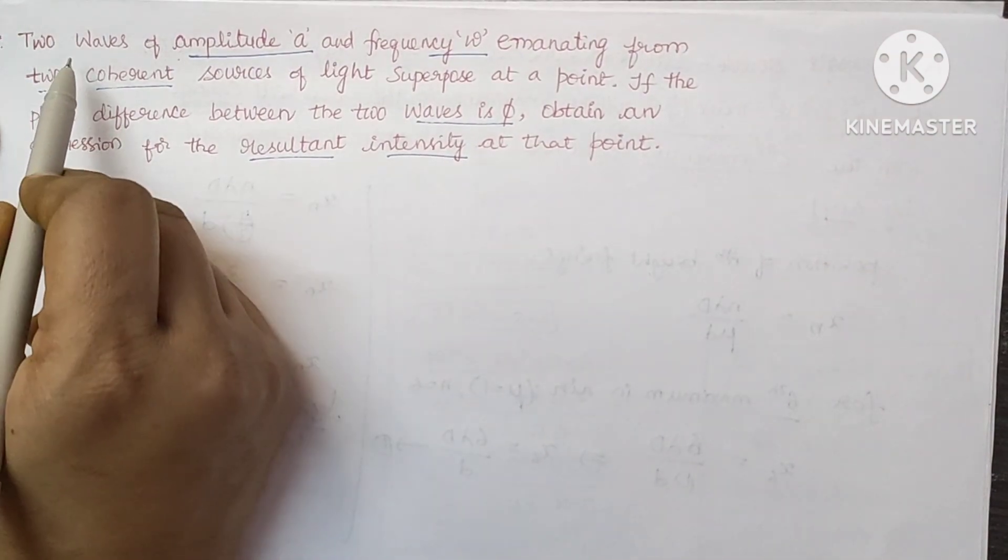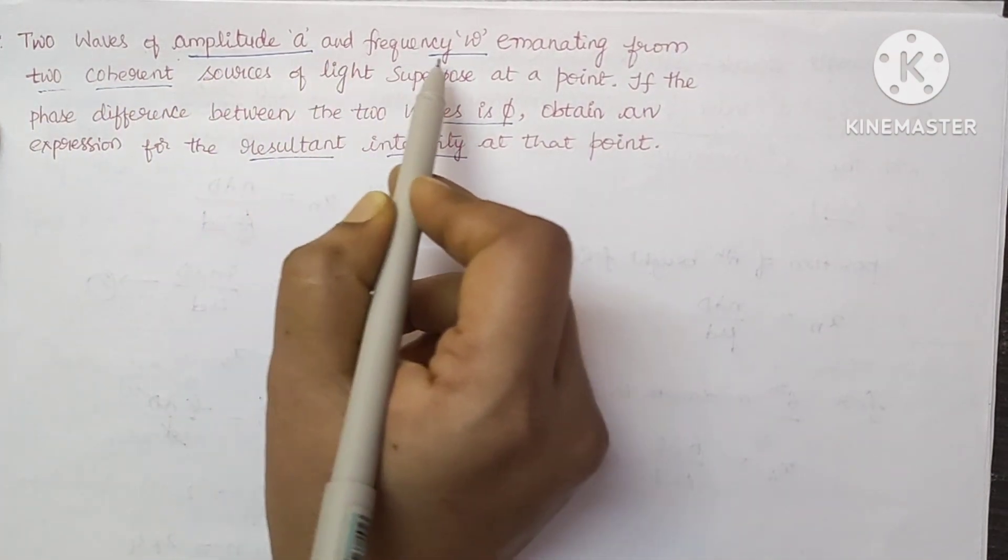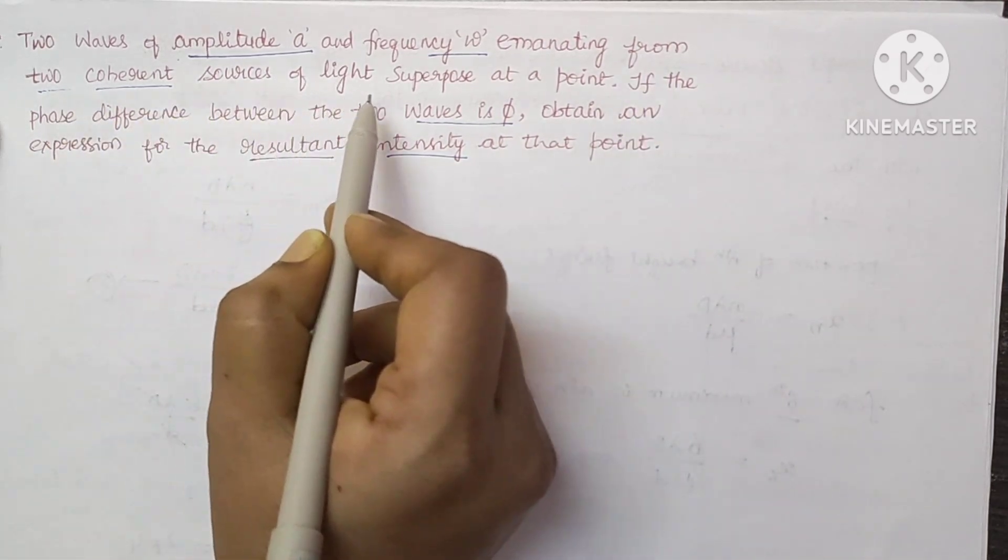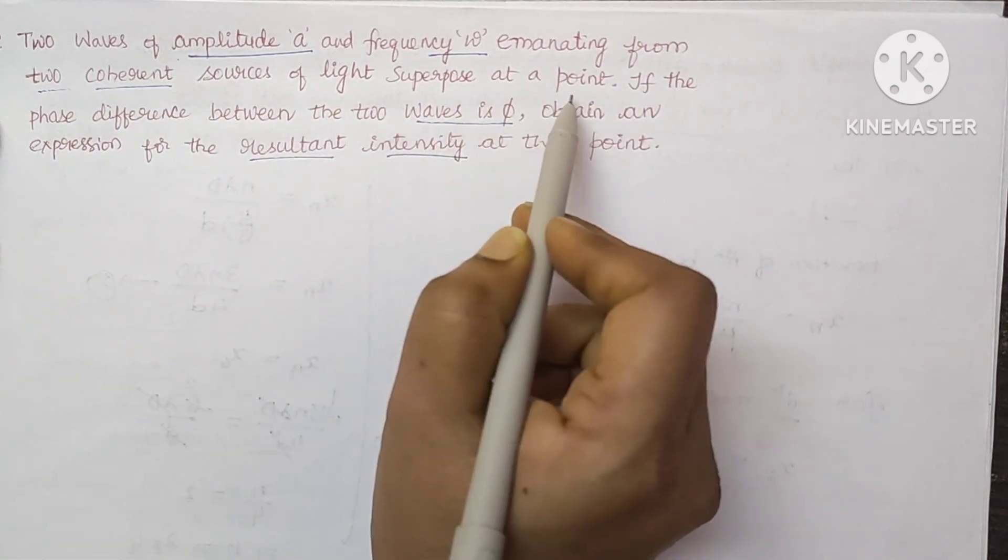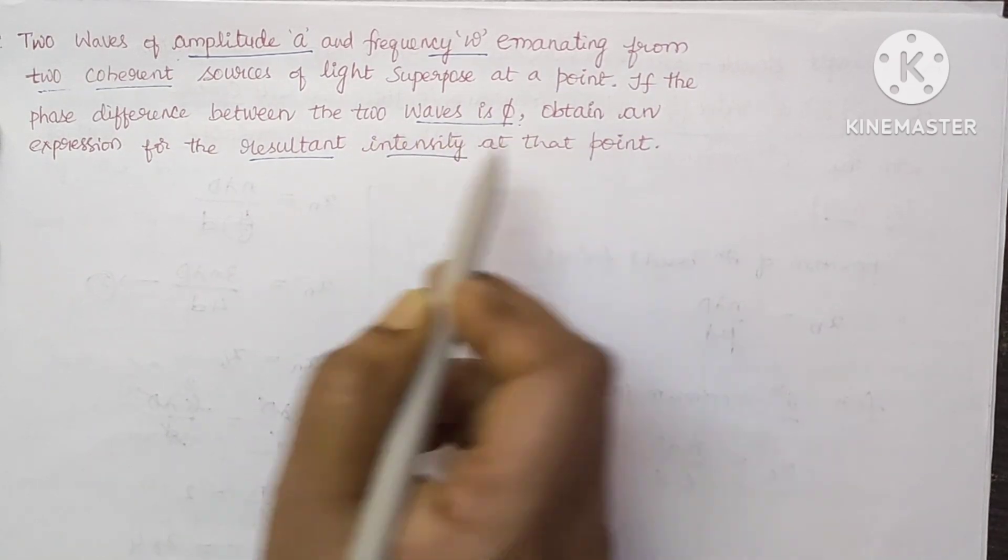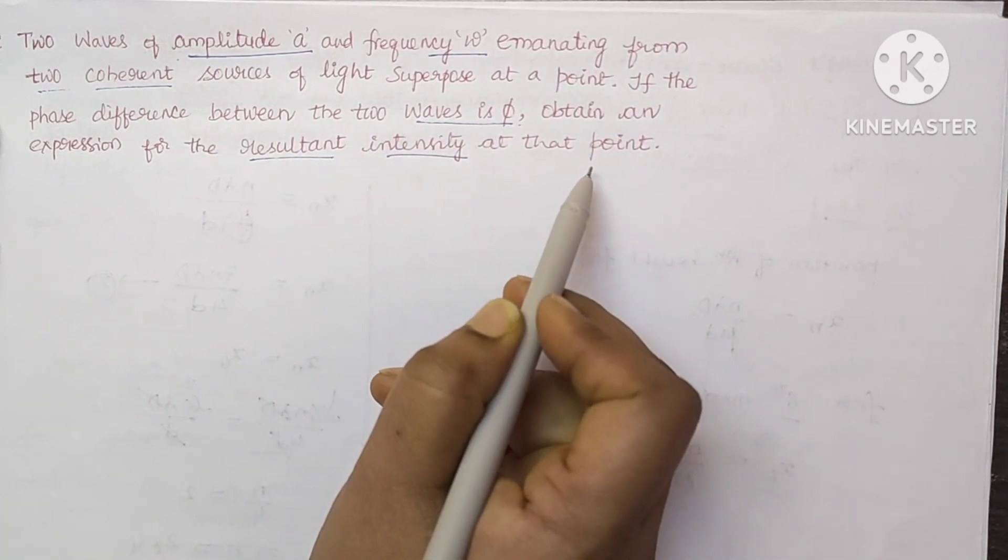Let's see the solution for this question. Two waves of amplitude A and frequency omega emanating from two coherent sources of light superpose at a point. If the phase difference between the two waves is phi, obtain an expression for the resultant intensity at that point.